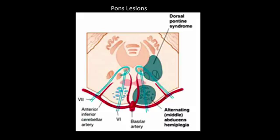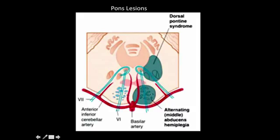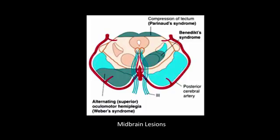There is another condition in the pons called central pontine myelinolysis. It is commonly asked on exams and is seen in hyponatremia or when we try to correct electrolyte imbalances too quickly. Because the entire pons is involved, there is extensive cranial nerve involvement and the patient will basically be locked in — locked-in syndrome.